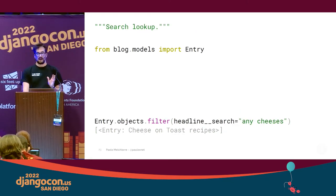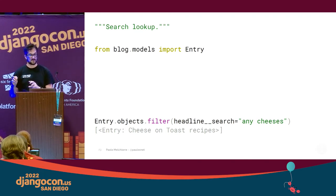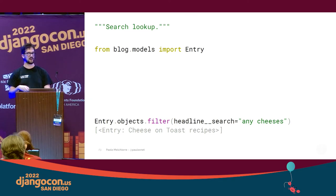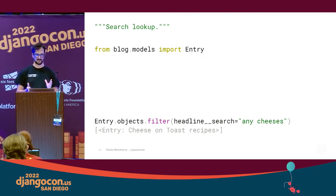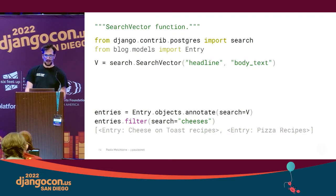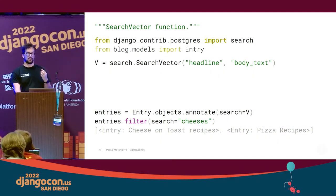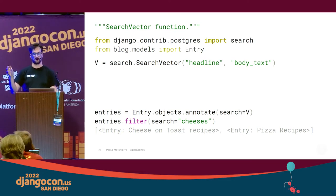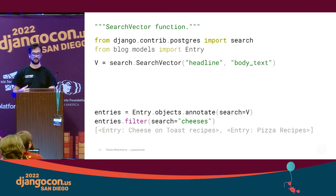We can also perform a full-text search on a specific field using the search lookup. For example, we can search for a word in the plural form and have results in the singular form. The search engine will also ignore very common words like 'article' in English. We can search text in more than one field using the SearchVector function — we can define our document as the union of the body text and the headline of the Entry model, and then search for a word and have results that match the query in both fields.